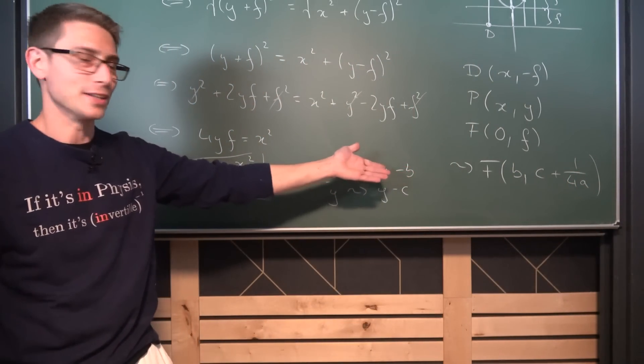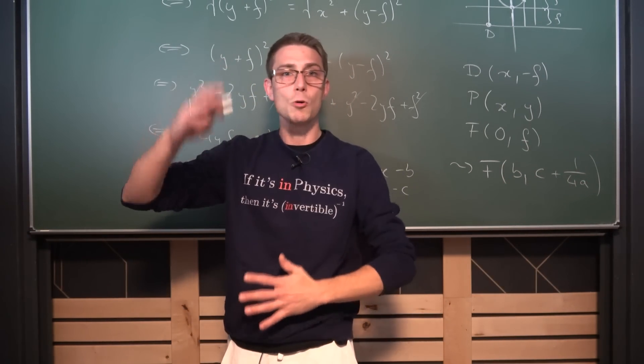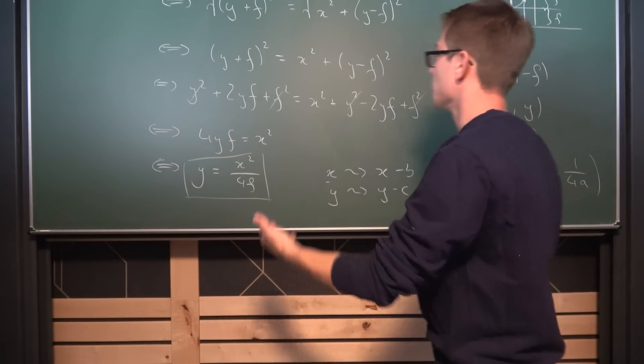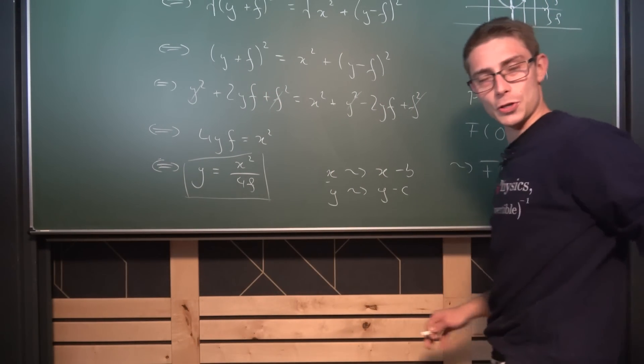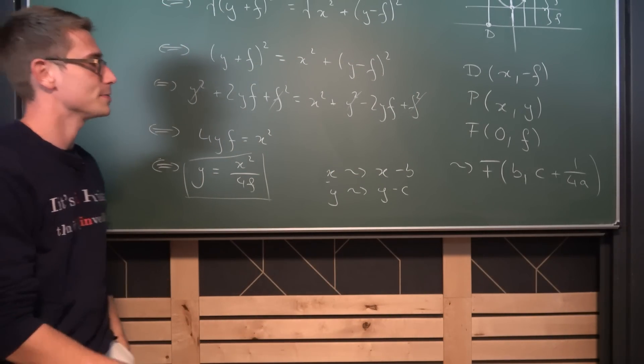And this right here is the generalized focal length, and if we now use this translation also on our focus point right here, we are going to get that since f is the same as 1/(4a), our focus F in the general case is going to lie at (b, c + 1/(4a)). Isn't that magical? And with this you can define any parabola, doesn't matter how it's opened, how it's stretched and the like, using conic sections and also the focus that we have covered here in this video.